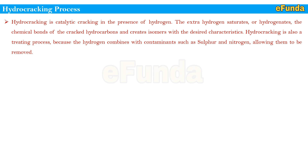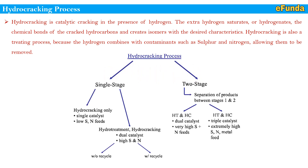One can refer to the overview of hydrocracking process configurations: single-stage hydrocracking uses a single catalyst for low sulfur and nitrogen feeds, combining hydrotreating and hydrocracking; dual catalyst configurations handle high sulfur and nitrogen feeds, with or without recycle. Two-stage configurations separate products between two stages using HT and HC dual catalysts for very high sulfur and nitrogen feeds, and triple catalyst for extremely high sulfur, nitrogen, and metal feeds.